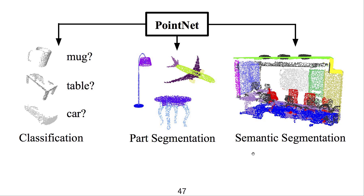Semantic segmentation refers to the segmentation of a point cloud that represents a scene. So these two applications are very closely related. The difference is that part segmentation is one object broken down into parts, while semantic segmentation is a scene broken down into individual objects.